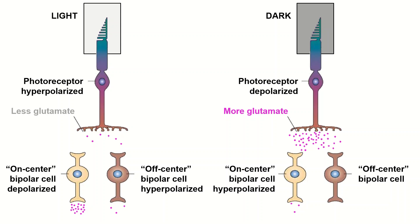Off center bipolar cells have the opposite response to glutamate because they have ionotropic glutamate receptors. When glutamate binds to the receptor it will open potassium channels, causing potassium to flow out of the off center bipolar cell, depolarizing it as the membrane potential increases, creating a graded potential in the bipolar cell.